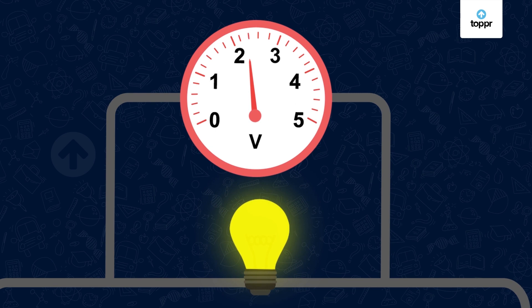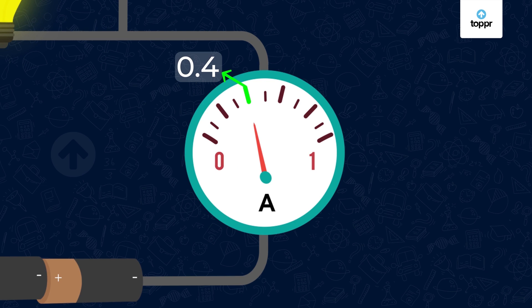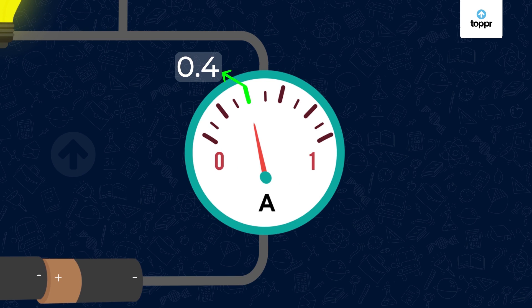Let's look at the reading now. Yes, it reads 2.4 volts, twice the initial reading. Now, let's look at the ammeter reading. It reads 0.4 ampere. Let's note these down too.